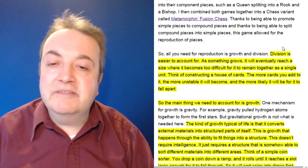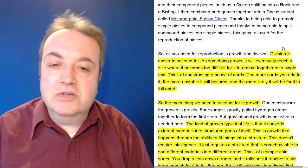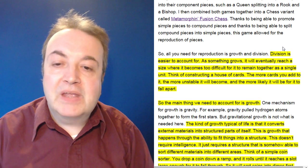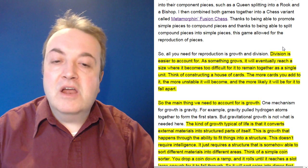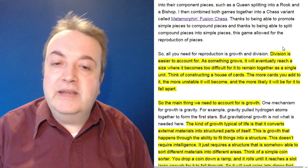So the main thing we need to account for is growth. The kind of growth typical of life is that it converts external materials into structured parts of itself. This is growth that happens through the ability to fit things into a structure. This doesn't require intelligence.